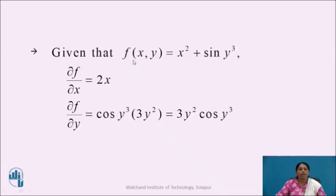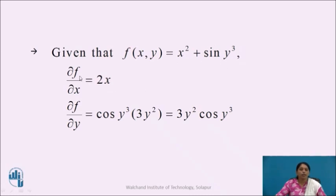Given that f(x,y) = x² + sin(y³). Differentiating f partially with respect to x, treating y as constant, the derivative of x² is 2x, and as y is treated as constant, the derivative of the sin(y³) term will be 0. So we get ∂f/∂x = 2x.